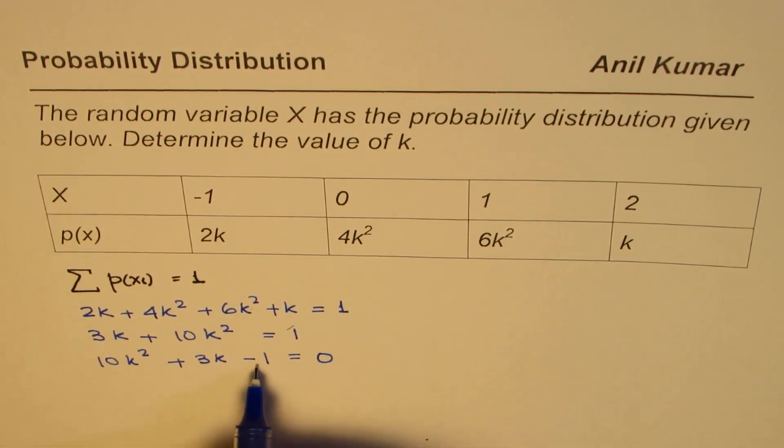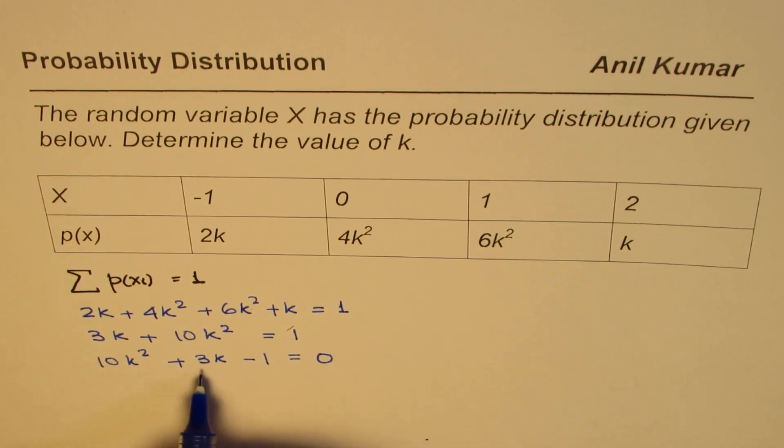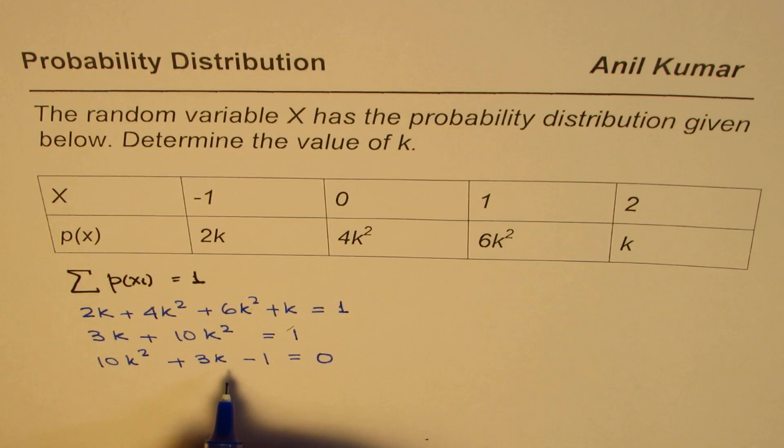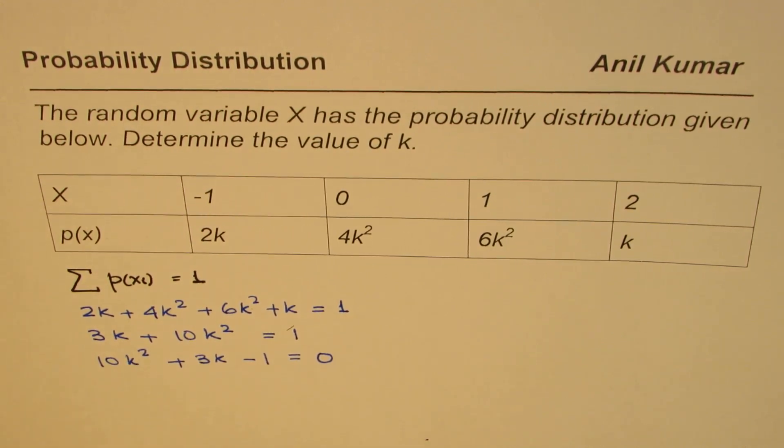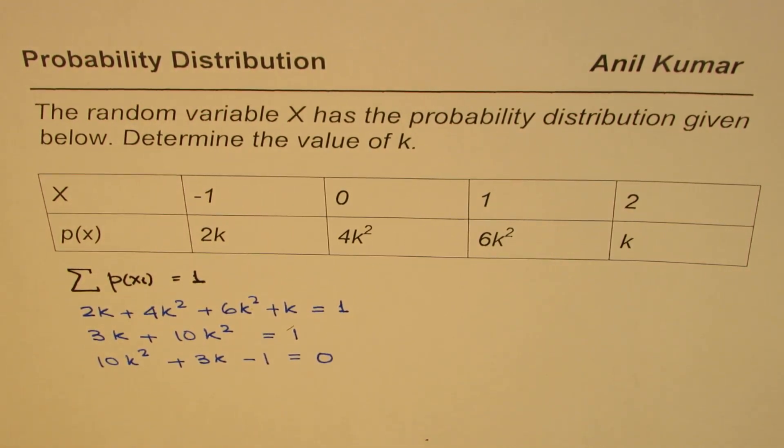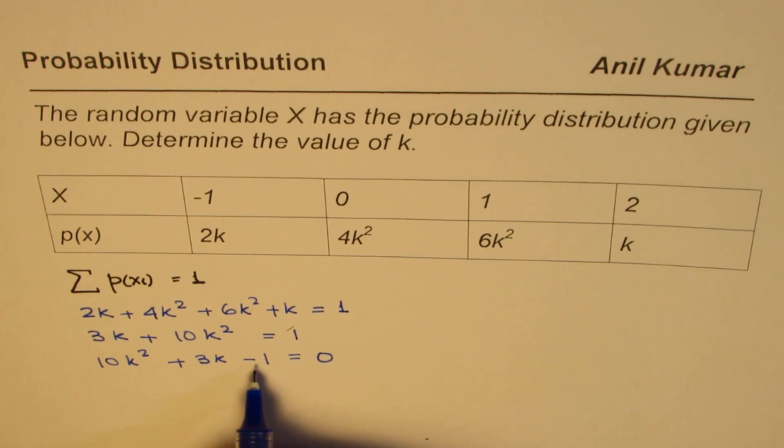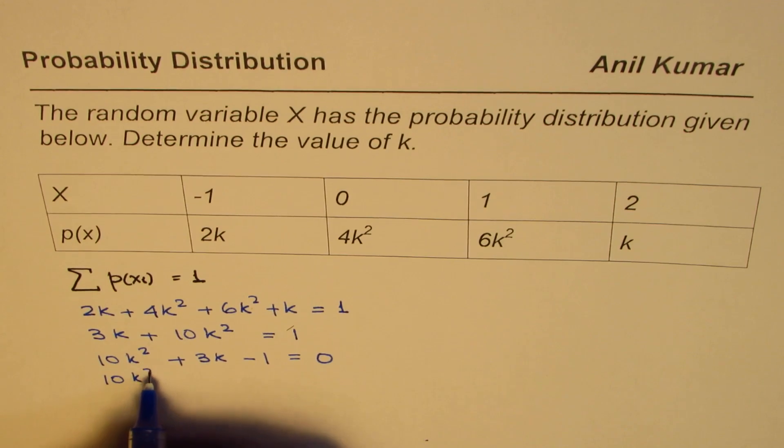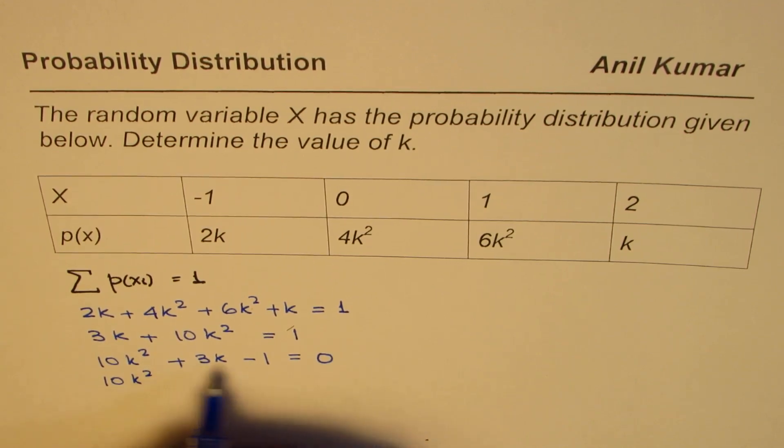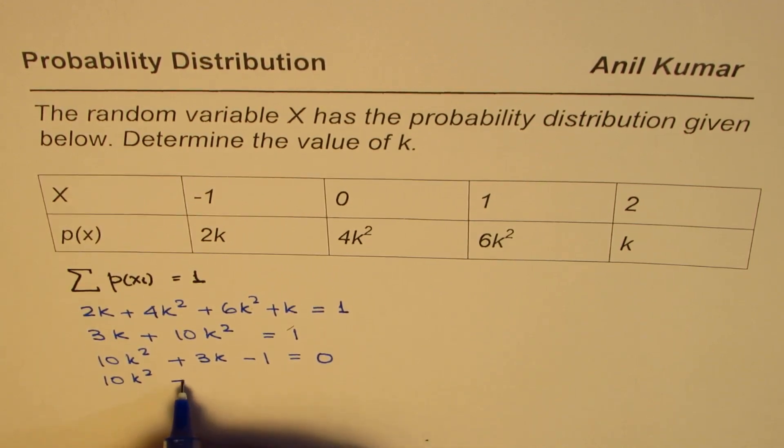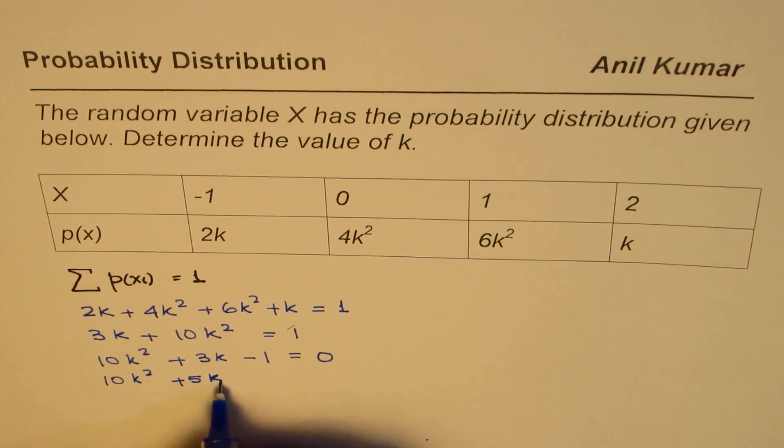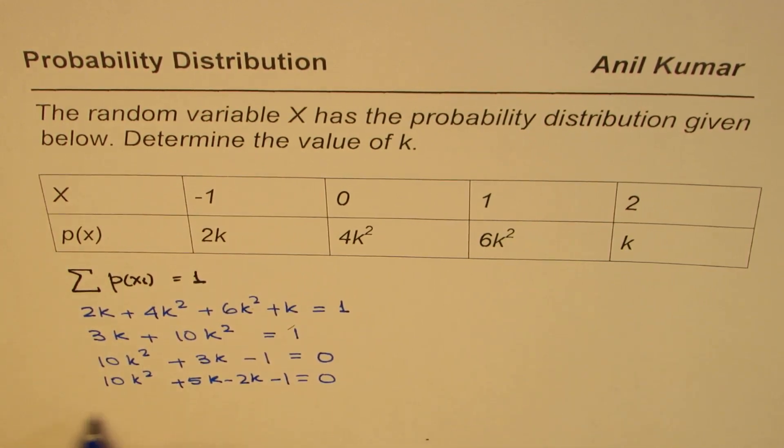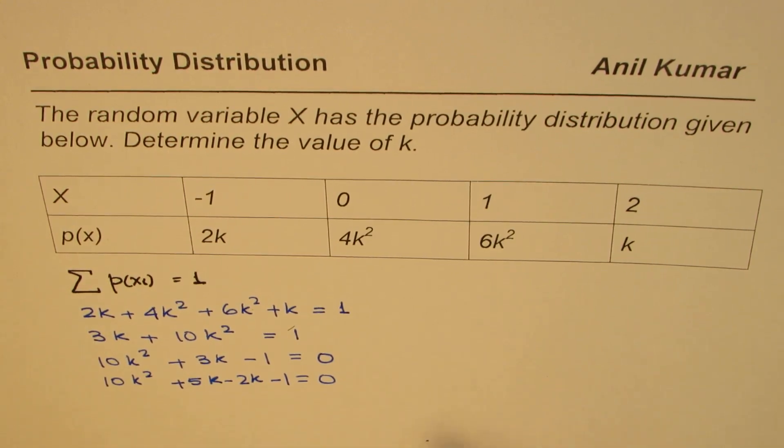We are looking for product of minus 10 and sum of 3, so we can factor this to find the solution. So we are looking for the product as 10 minus and sum 3, so we can write this as 10k square, so 5 and 2, 5 times 2, 5 will be positive, 5k minus 2k minus 1 equals to 0.